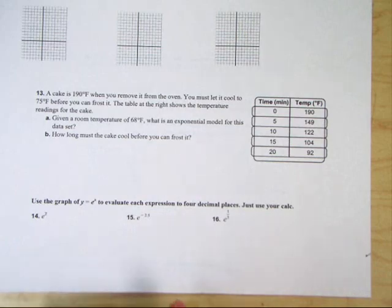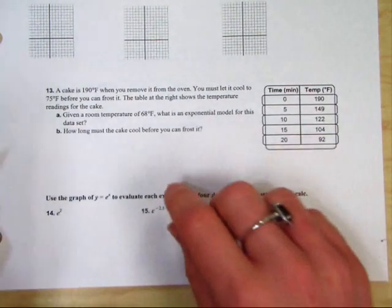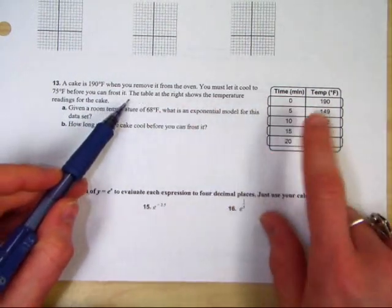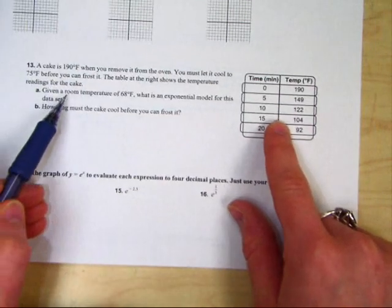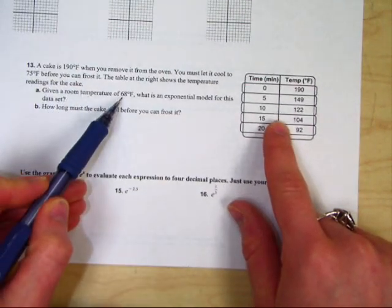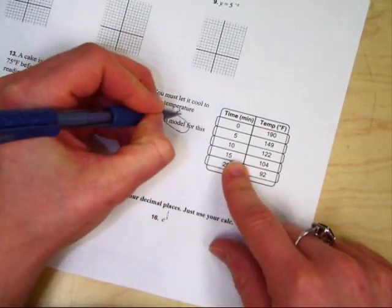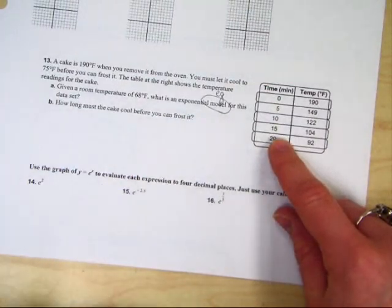A cake is 190 degrees when you remove it from the oven. You must let it cool to 75 degrees before you can frost the cake. The table at the right shows the temperature readings for the cake. Given that room temperature is 68 degrees Fahrenheit, what exponential model, which just means an equation, what is the exponential model for this data set?